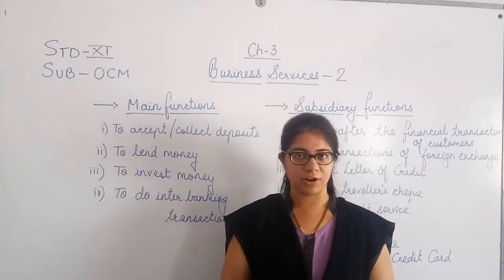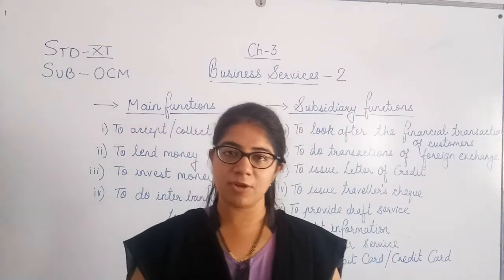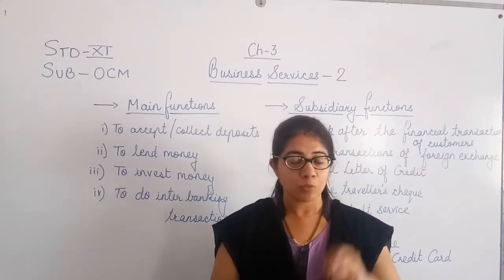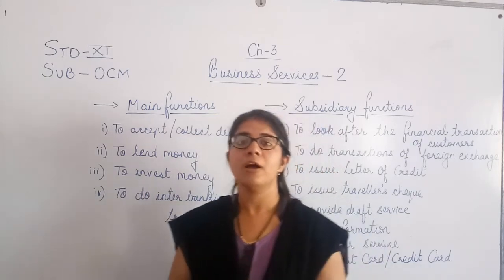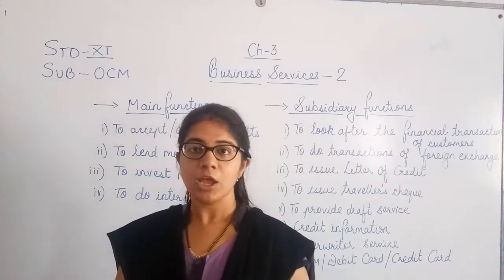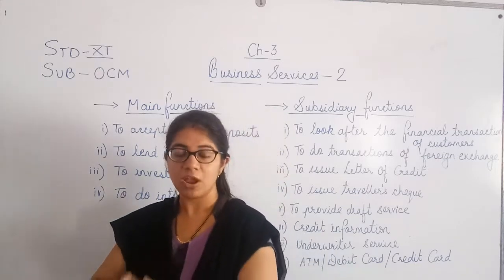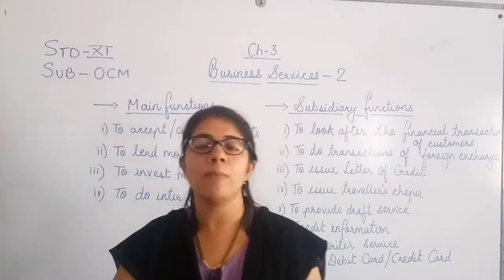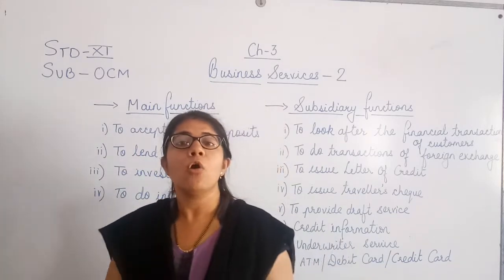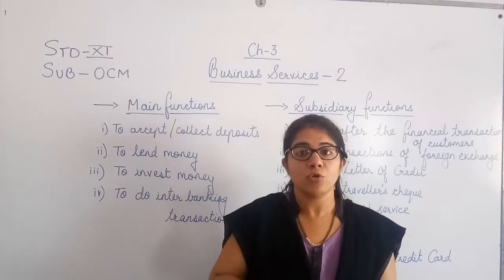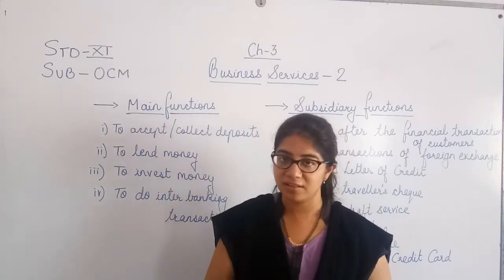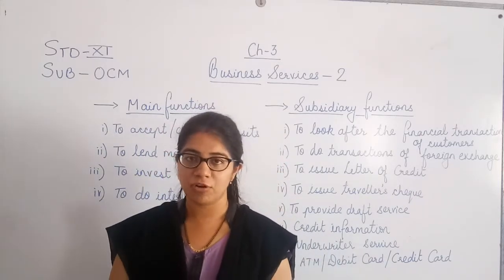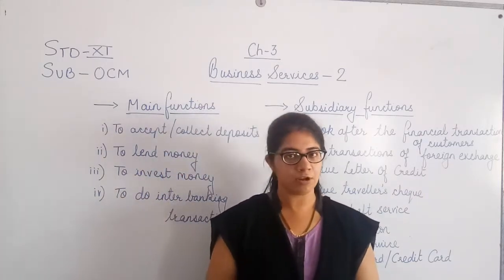Another lending facility is overdraft or cash credit. Suppose a customer needs 20 lakh rupees but only has 15 lakh in their account. They can withdraw the 15 lakh from their account, and the extra 5 lakh they need is taken as a loan from the bank — this is called overdraft. The customer pays interest on that 5 lakh rupees. Overdraft is for a very short period of time, whereas cash credit is for a predetermined time period.